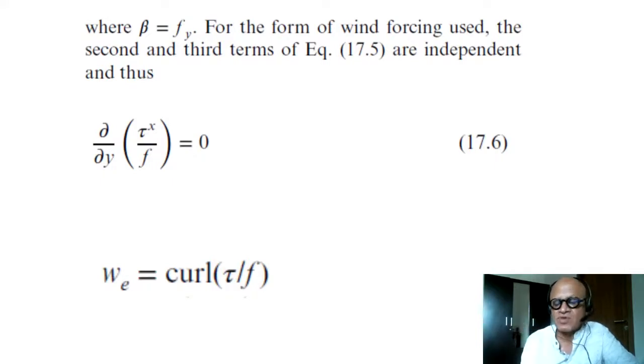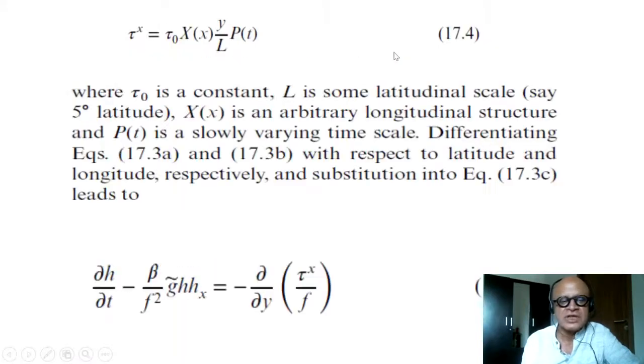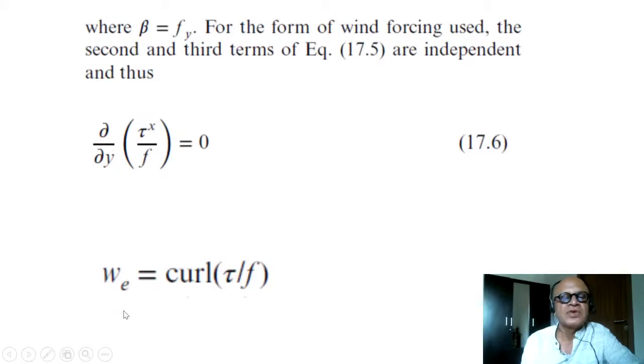In this nice paper by Miyama, you have the details of this calculation. They assume that the initial state is at rest, so h is fixed—it is a constant depth H. In that case, the equation gives dh/dt equal to zero, so we end up with a constant h.